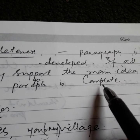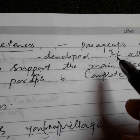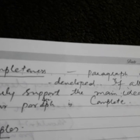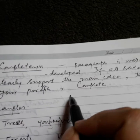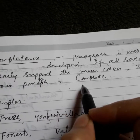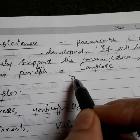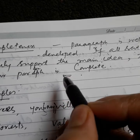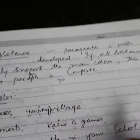After that, Completeness. Completeness means the paragraph should be well developed. All sentences — the opening topic sentence, the supporting sentences, and the concluding sentence — should all together support the single idea. If all the sentences are supporting that single idea, then your paragraph is complete.